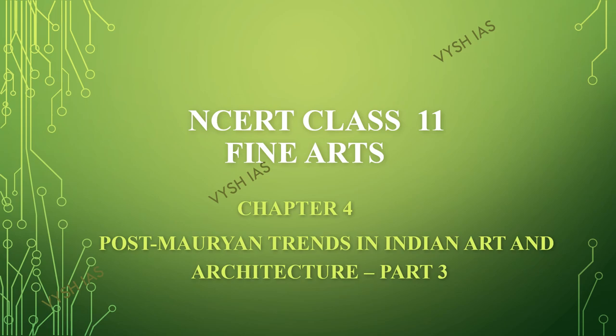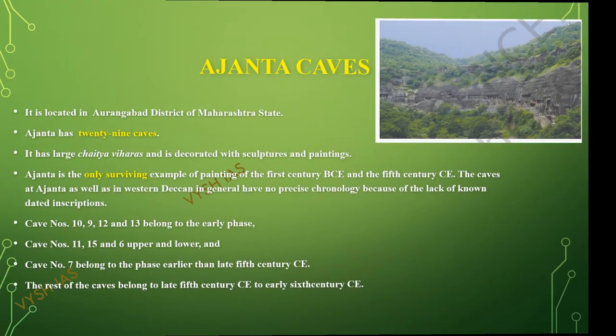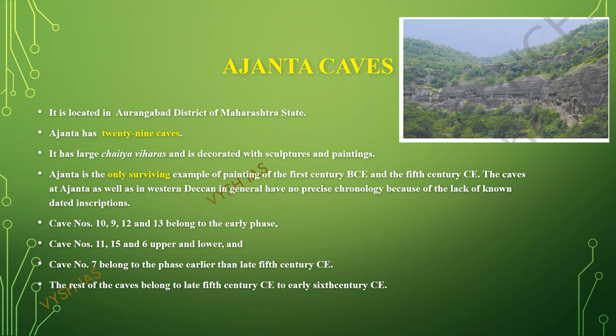We are going to see about the Ajanta Caves. It is located in Aurangabad district of Maharashtra. It has 29 caves. This is the overview of Ajanta Caves — how it looks from outside. It has large chaitya viharas and is decorated with sculptures and paintings. This is the only surviving example of paintings of the 1st century CE and 1st century BCE.